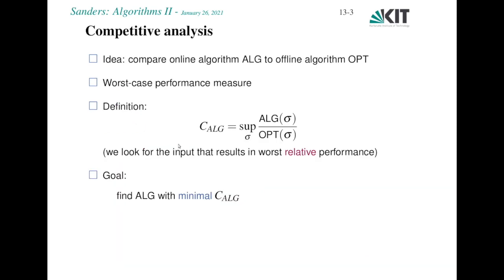Let's look at a formal framework for algorithm analysis. We are comparing an online algorithm, let's call it ALK, with an optimal offline algorithm OPT. What we are doing here is a worst-case performance measure, similar to approximation algorithms. The competitive ratio C(ALK) of algorithm ALK is the ratio between the performance of our online algorithm divided by the performance of the optimal offline algorithm, maximized over all input sequences sigma. So it's worst-case relative performance.